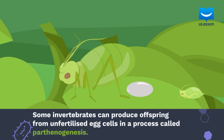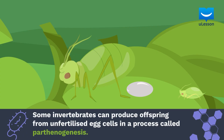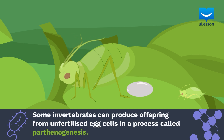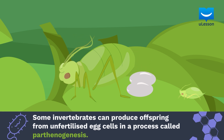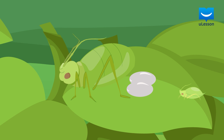Lastly, some invertebrates like nematodes, aphids, mites, and honeybees can do something amazing. They can produce offspring from unfertilized egg cells in a process called parthenogenesis.